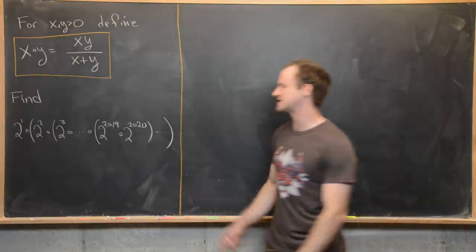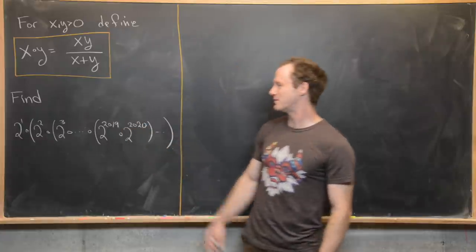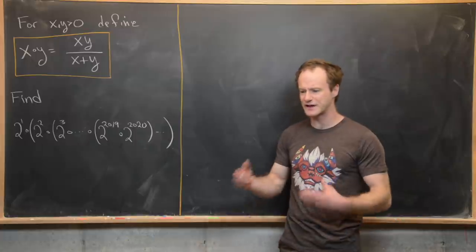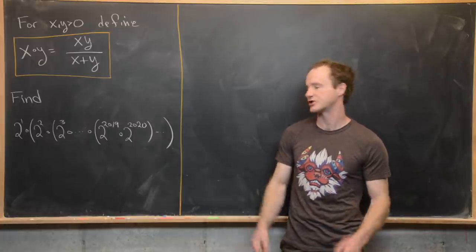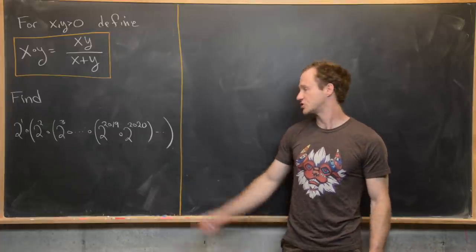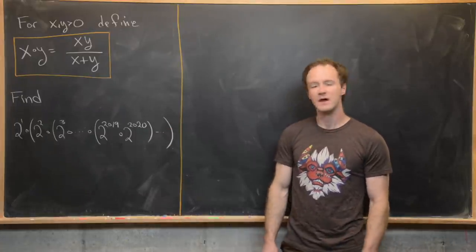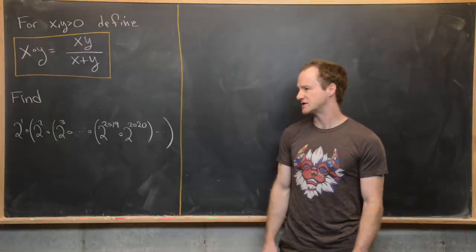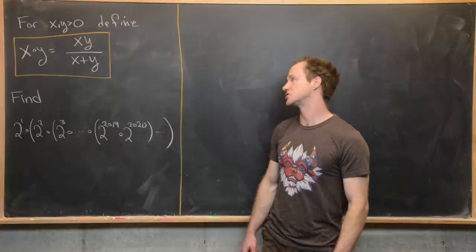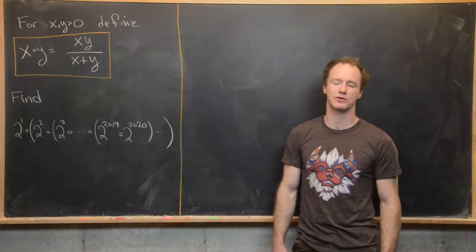Anytime you've got something like this which is dependent on an endpoint — in this case 2020 — where that 2020 could be replaced with some arbitrary natural number, you can probably prove something with induction. And this is like a special case of that. There's also a way to do this without induction by looking at what is essentially the associativity of this operation.